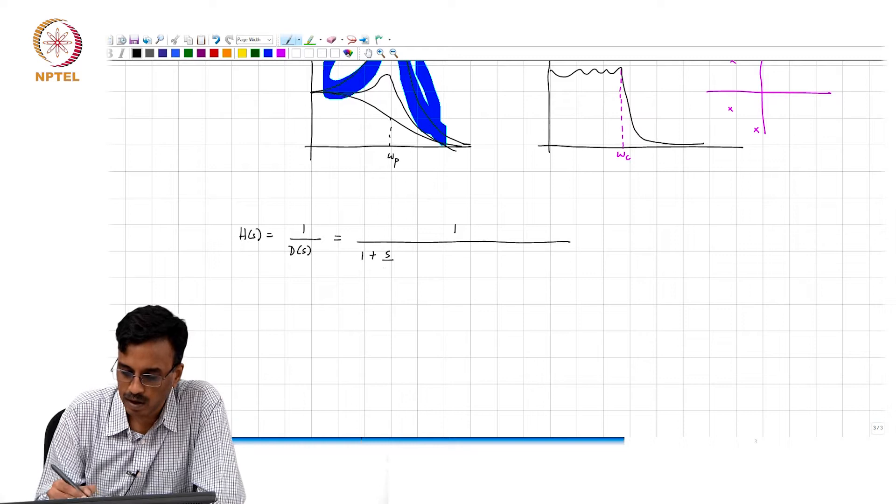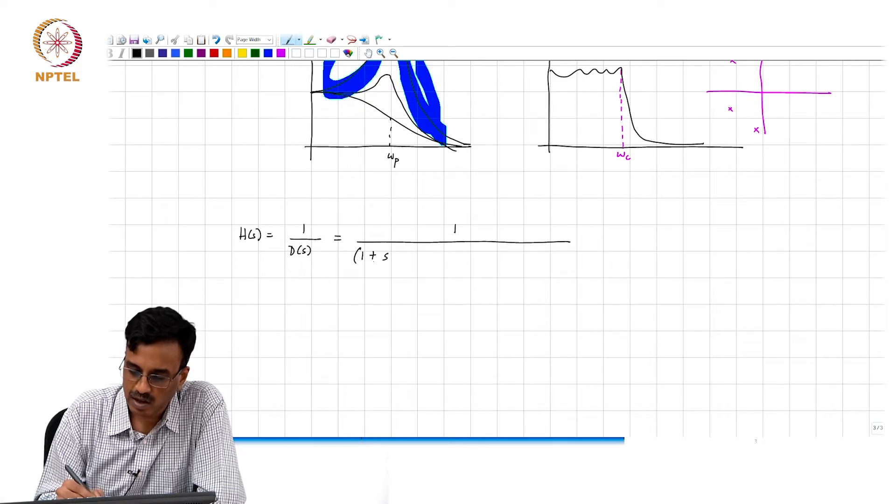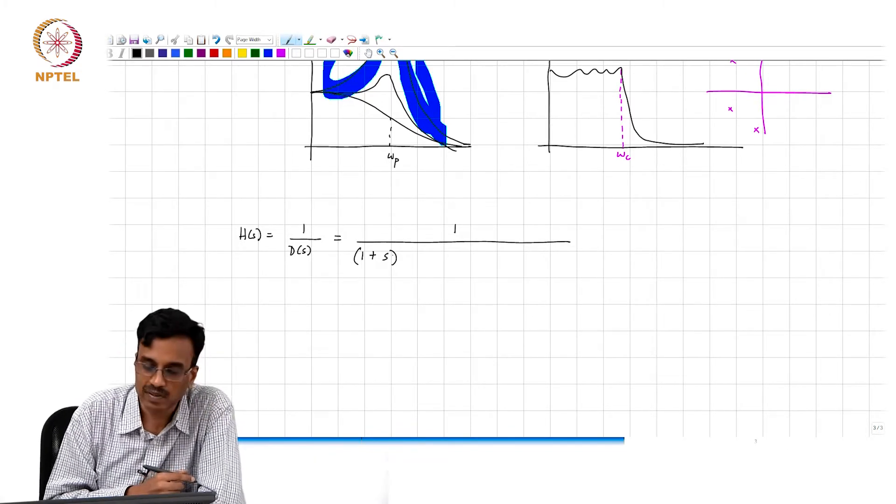If I assume it is Butterworth, it is 1 over 1 plus s. For an odd order Butterworth there will be a pole at minus 1.